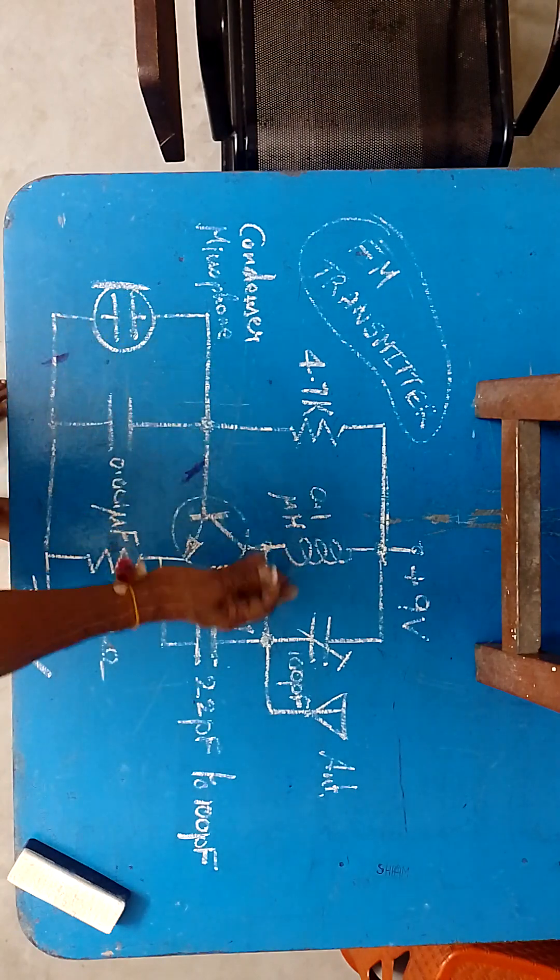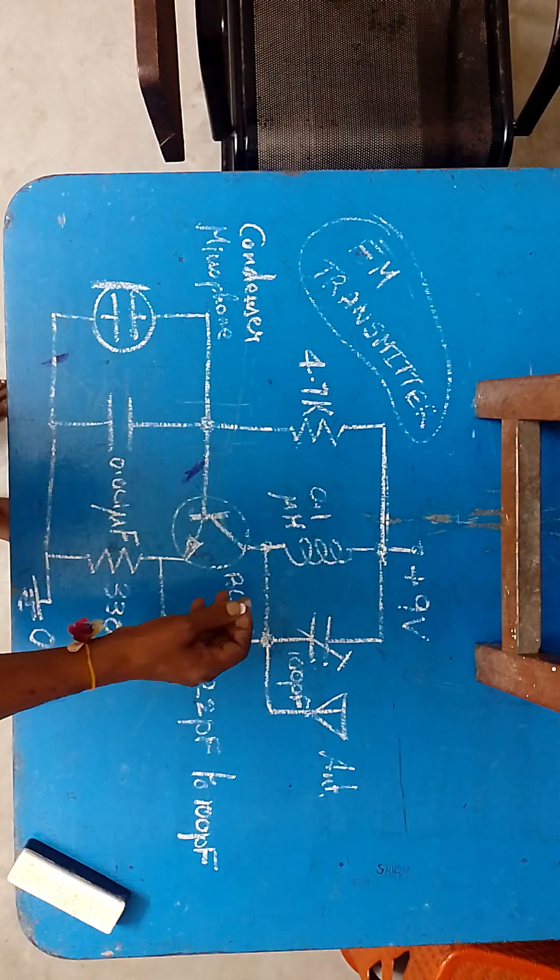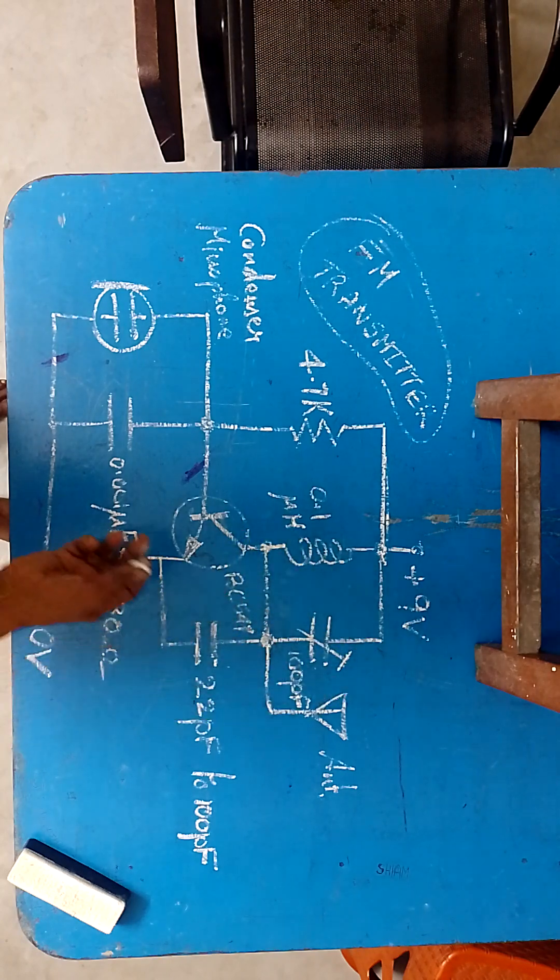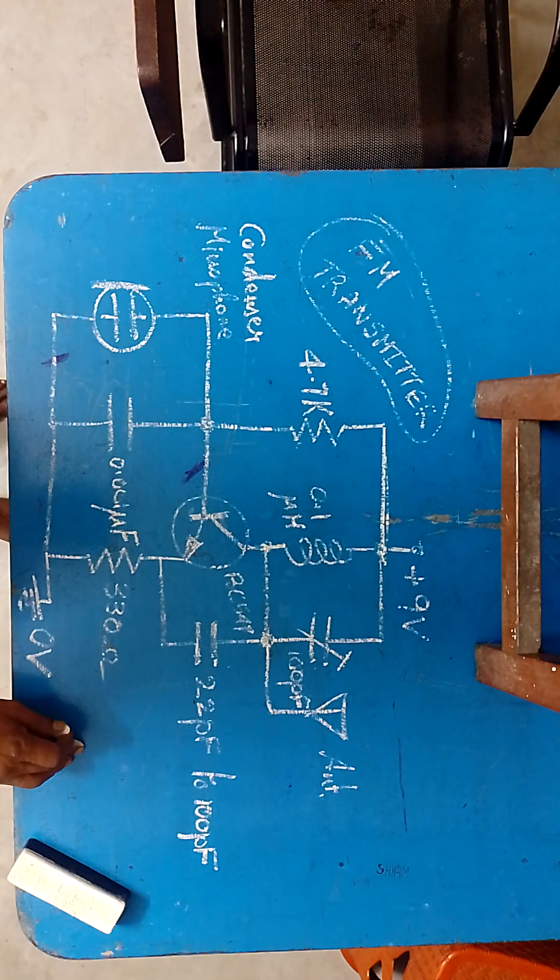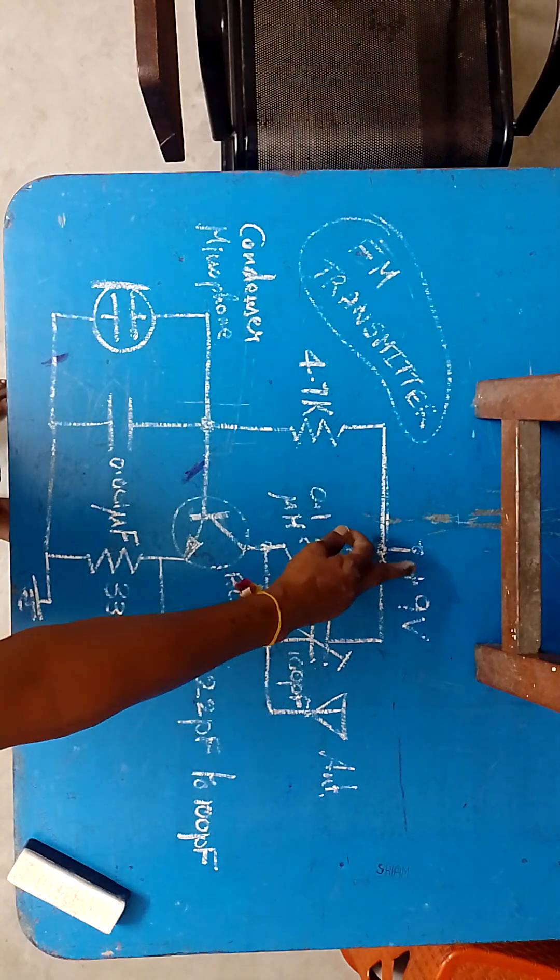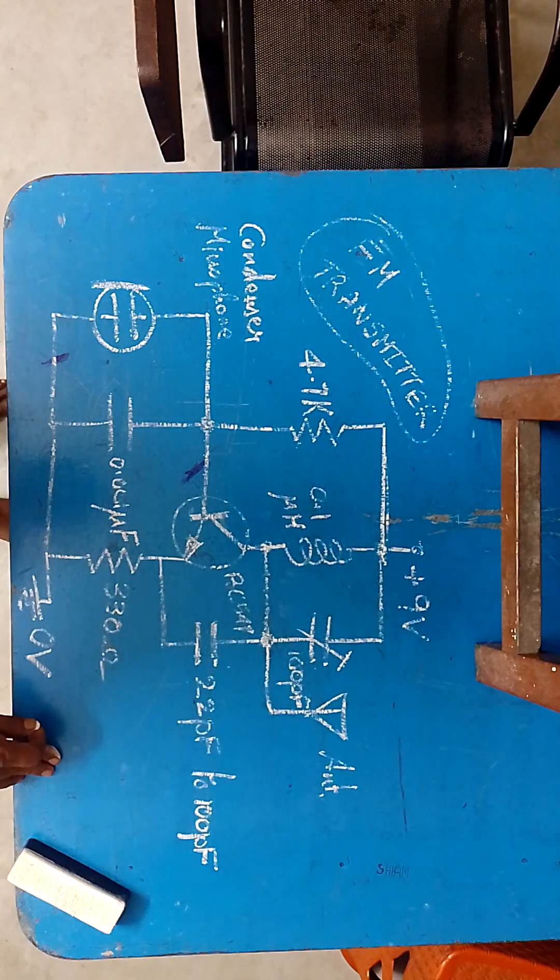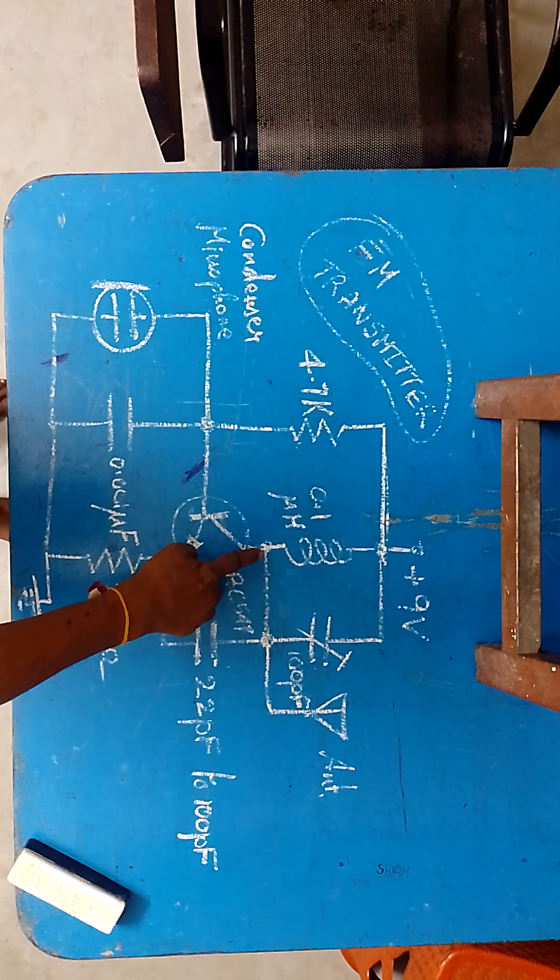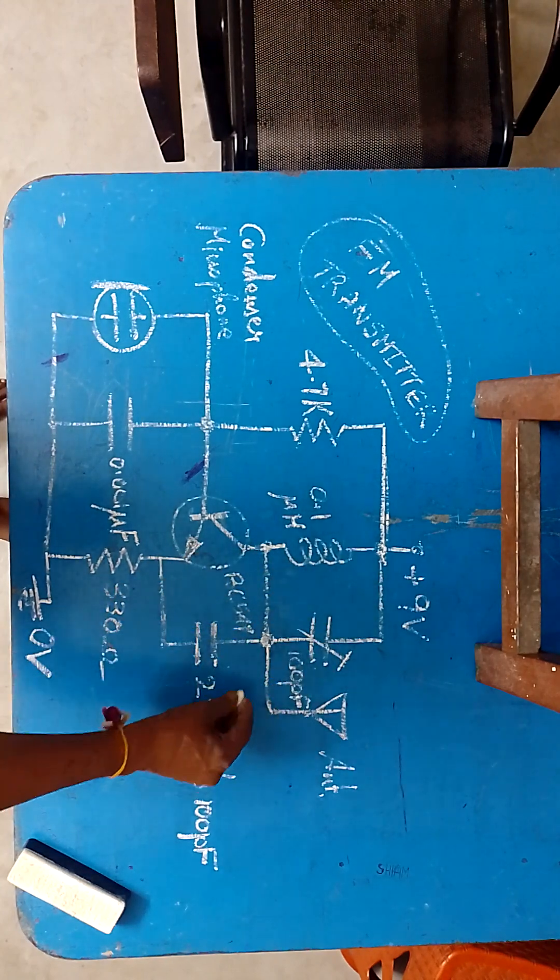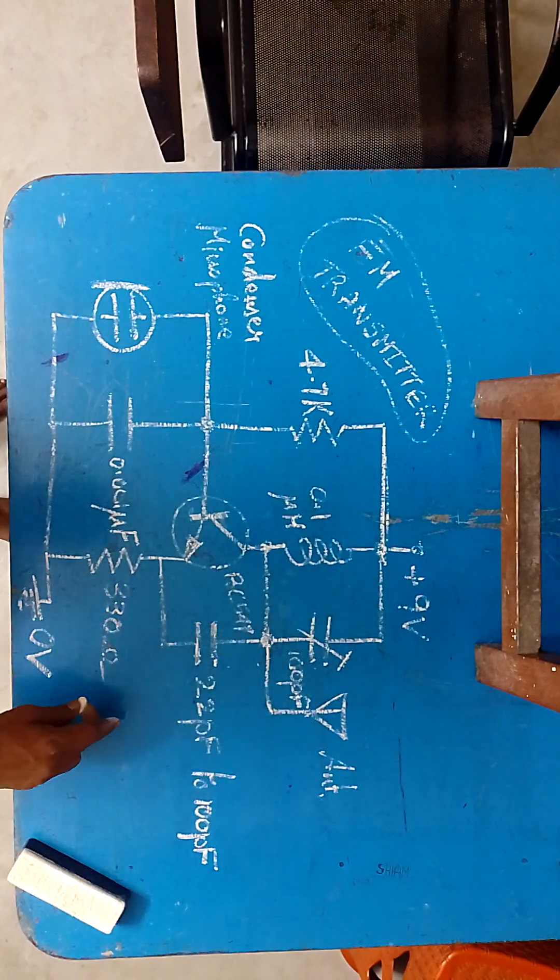How it is modulating this resonant circuit: because if you draw the AC equivalent circuit this will become grounded. If you do the AC analysis this will be grounded. And what happens is between collector and emitter you have this capacitance. And between collector and ground, that is between this point and ground, you have the tuned circuit.